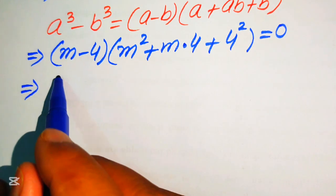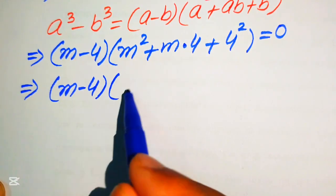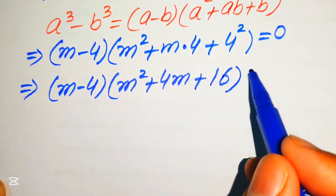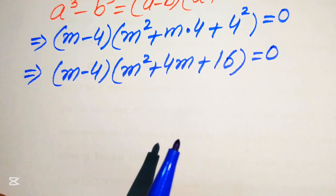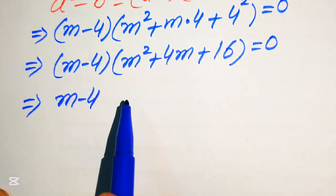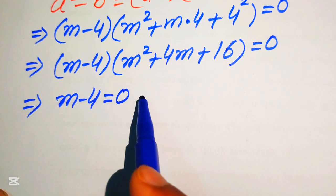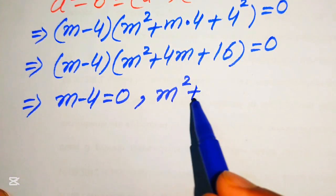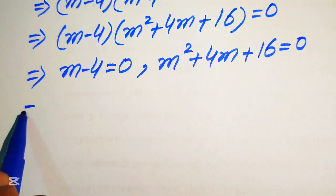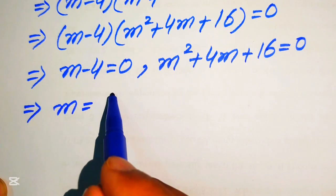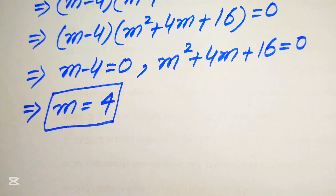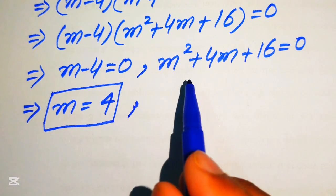After simplification this becomes (m minus 4)(m squared plus 4m plus 16) equals 0. We split this into two cases: Case 1 is m minus 4 equals 0, and Case 2 is m squared plus 4m plus 16 equals 0. From Case 1 we easily get m equals 4, which is our first real root.